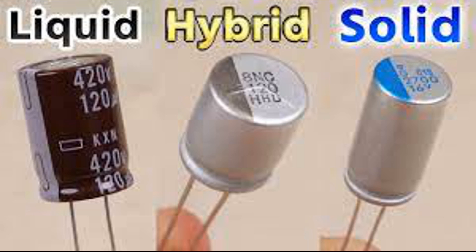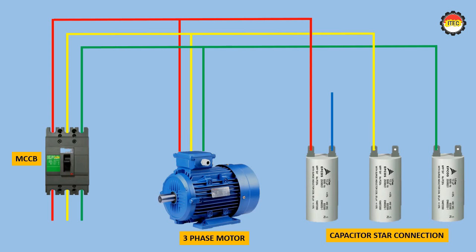Functions of power factor correction capacitors include: improving the power factor of electrical systems by offsetting the inductive component of the load; reducing energy costs by helping reduce reactive power consumption, leading to lower energy costs for the consumer; and increasing system efficiency by reducing losses associated with low power factor, such as increased line currents and voltage drops.